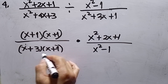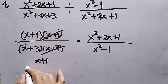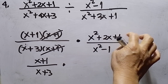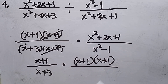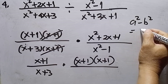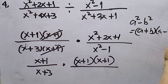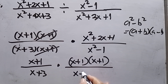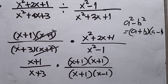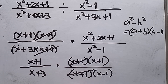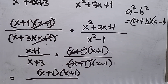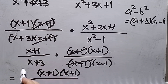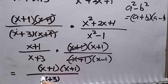The (x² + 2x + 1) in the first numerator and the flipped numerator cancel out. So we have (x + 1) over (x + 3), times the factored form of x² + 2x + 1 which is (x + 1)(x + 1), over the factored form of x² - 1 — which is a difference of two squares: (x + 1)(x - 1). The (x + 1) factors cancel, leaving (x + 1) in the numerator and (x + 3)(x - 1) in the denominator.